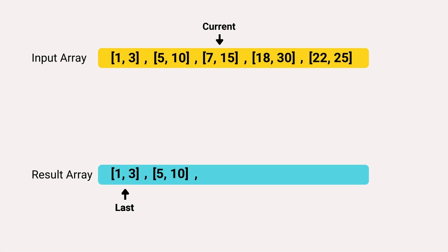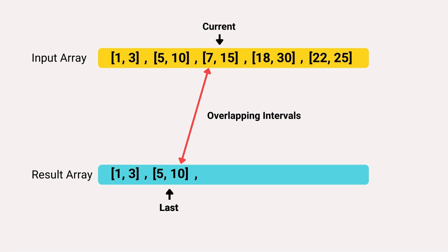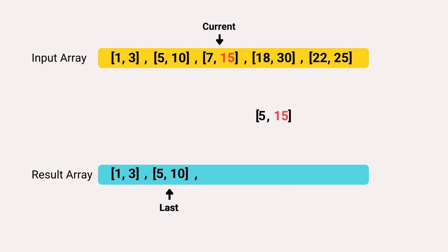In the next iteration, the current interval has a start of 7 and an end of 15, while the last interval has a start of 5 and an end of 10. The start time of the current interval is less than the end time of the last interval, indicating they are overlapping and should be merged. The newly merged interval will have the start time of the last interval — which is 5 — and the end time is the maximum of both, which is 15. We add this merged interval to the result array.